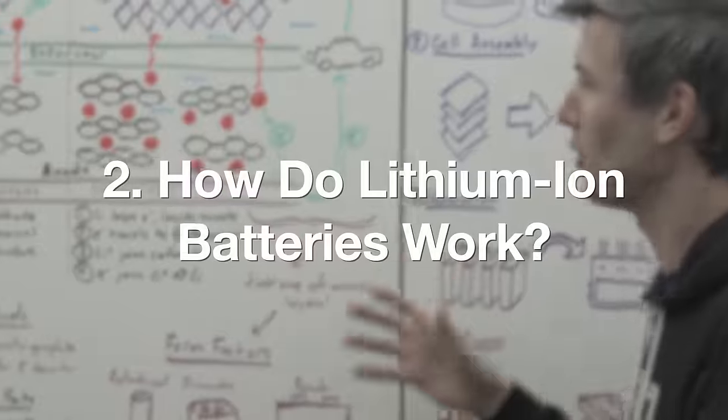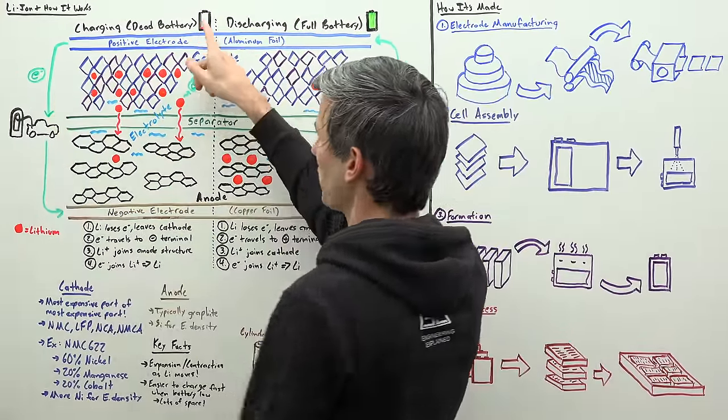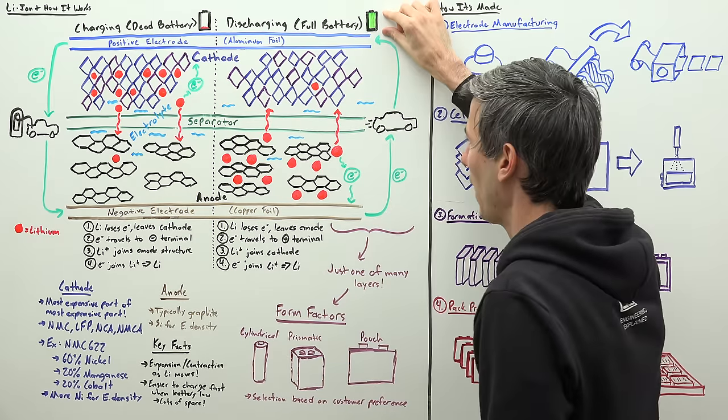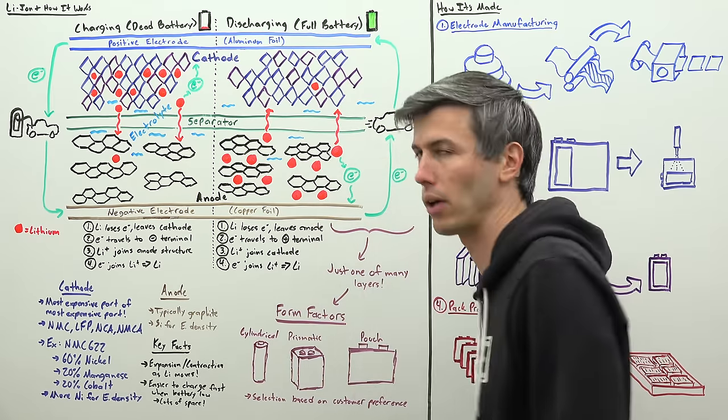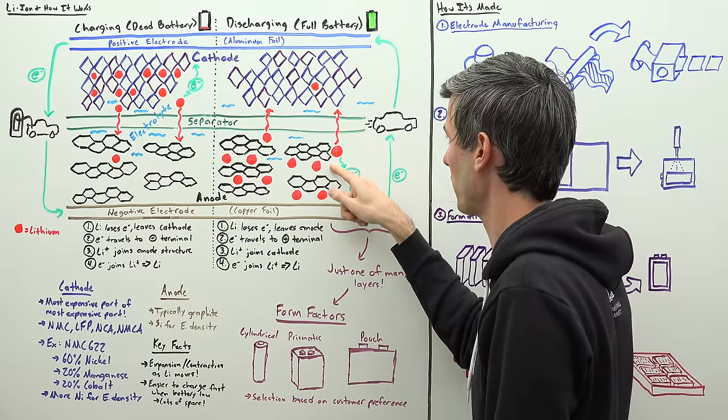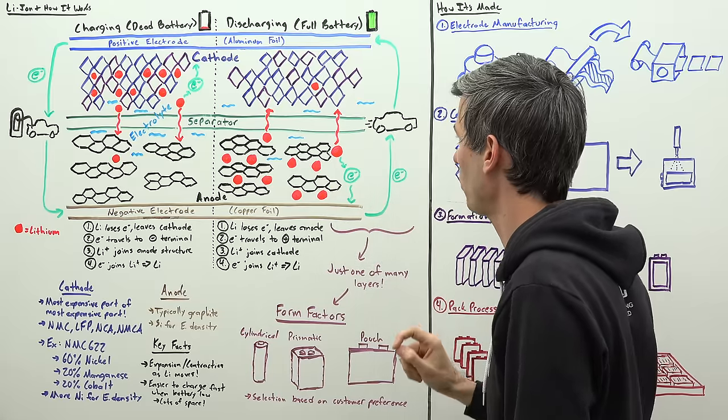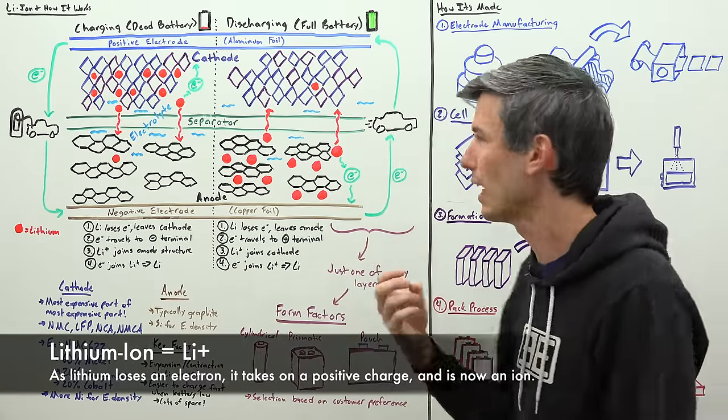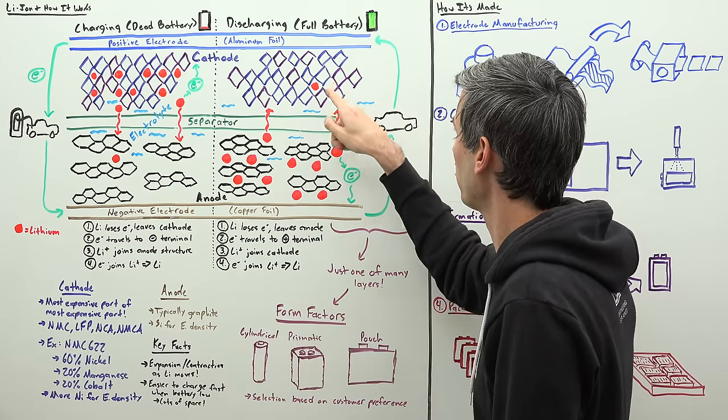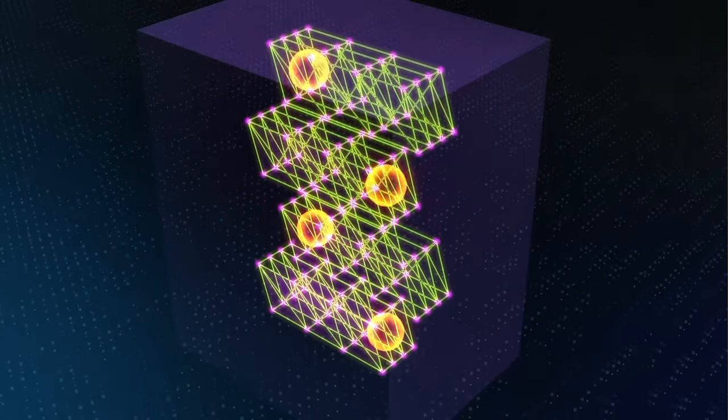So how does it all work? I've separated this drawing into two sections here. On the left side, we have what is essentially a dead battery that is just starting to charge, and on the right side, we have a full battery which is just starting to discharge and power our electric car. The process is pretty straightforward. We have a lithium atom which is within the anode structure, and it loses an electron to that anode structure, which then goes on to power our car. Since the lithium has lost an electron, it is now a lithium ion, and it travels through the separator to find a parking space within the cathode structure, where it is then rejoined with an electron.